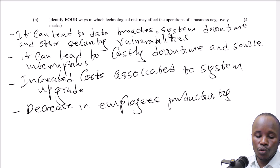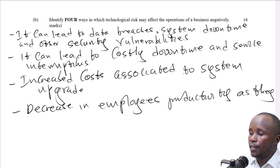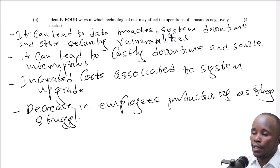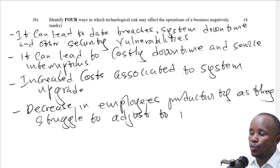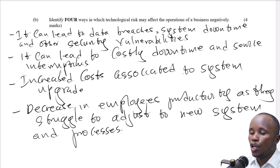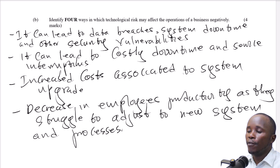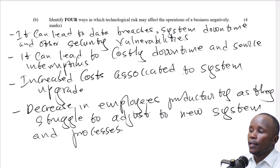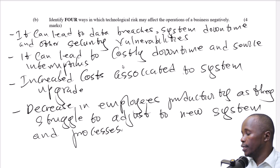As employees struggle to adjust to new systems and processes. So those are the four major negative risks associated with technology.